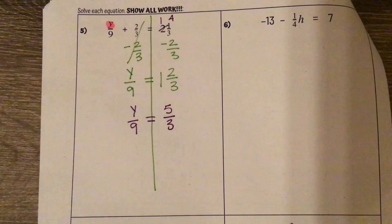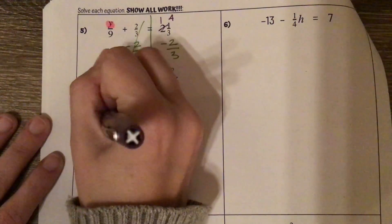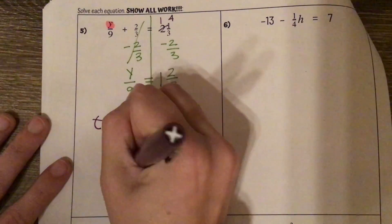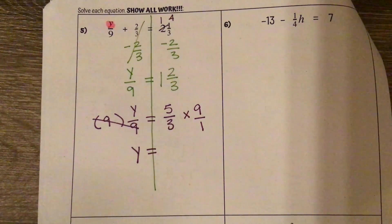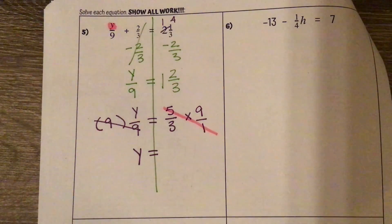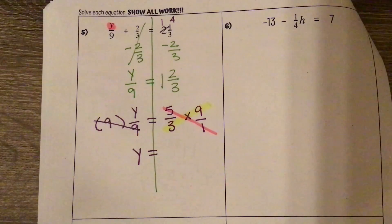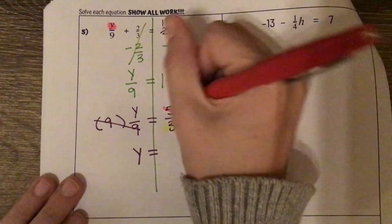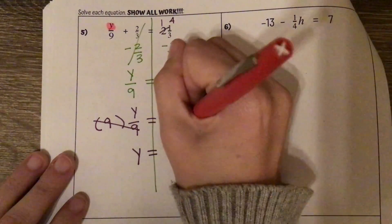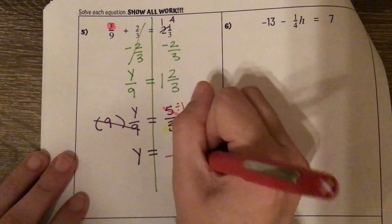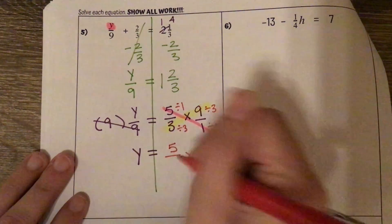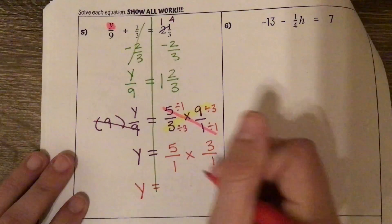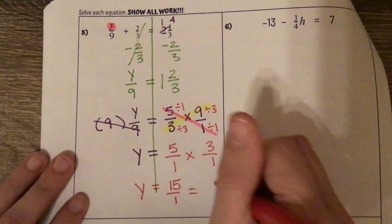Now I'm going to show my multiplication. I'm going to multiply this side by 9 so that it cancels, and multiply this side by 9 over 1. We get y equals. Checking my diagonals: 5 and 1 only divide by 1; 9 and 3 divide by 3. So: 5 divided by 1 is 5, 3 divided by 3 is 1, 9 divided by 3 is 3, 1 divided by 1 is 1. We get y equals 15 over 1, or y equals 15.